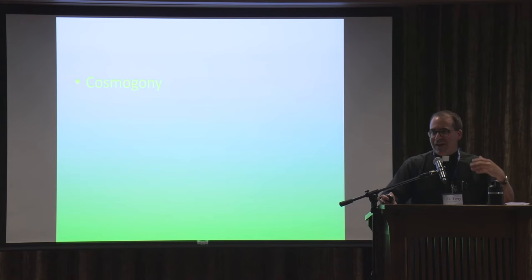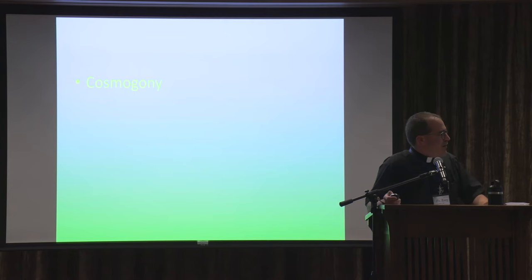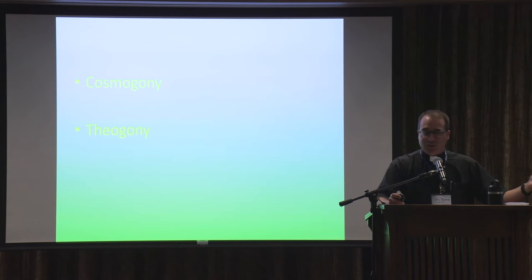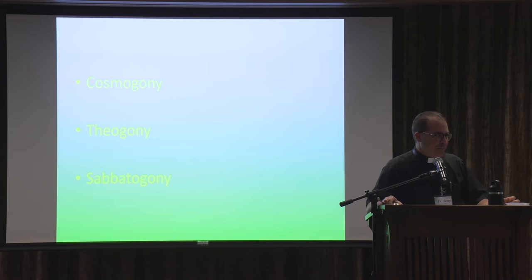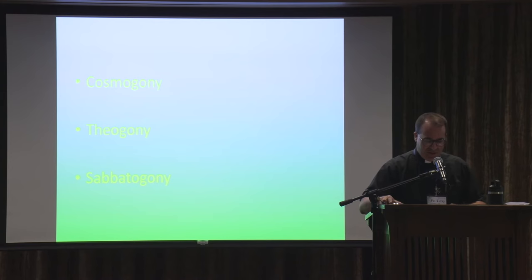Enuma Elish is a cosmogony — the origin of the cosmos. So Genesis 1 and Enuma Elish are both cosmogonies. Enuma Elish is also a theogony — telling where all those gods come from — but Genesis 1 is not a theogony; there's just one God. What I think Genesis 1 really is: a sabbatogony — it's about where the Sabbath comes from. God is the creator who's entered into a covenant relationship with his people, and the importance of the Sabbath is, I think, ultimately what this story is about. Creation and redemption.